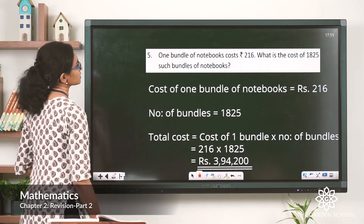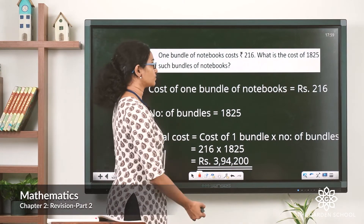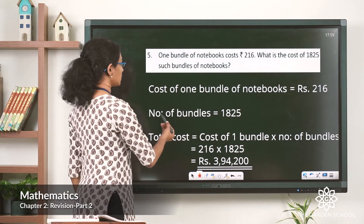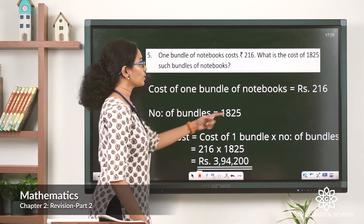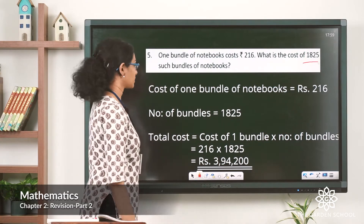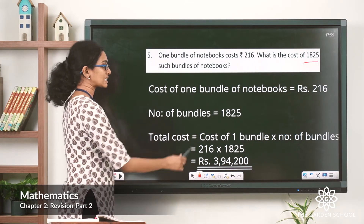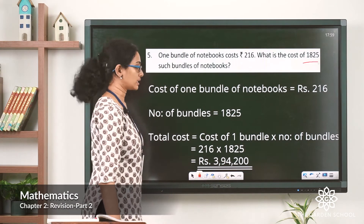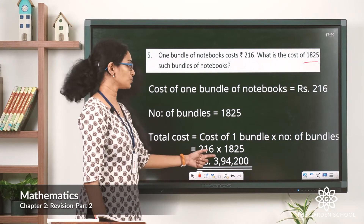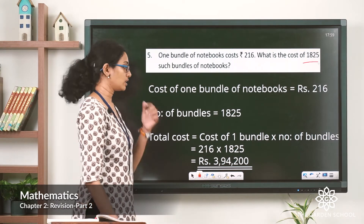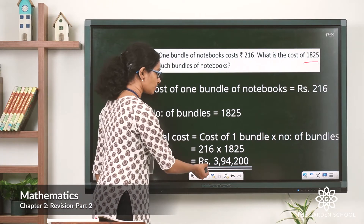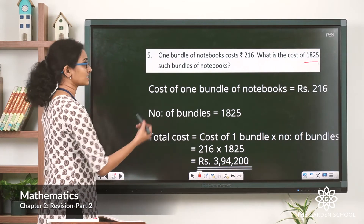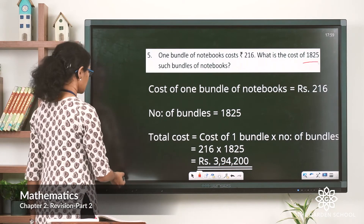Let's write down the steps. The cost of one bundle of notebooks equals rupees 216. The number of bundles equals 1,825. The total cost equals the cost of one bundle multiplied by the number of bundles, which is 216 into 1,825. That gives a total cost of rupees 3,94,200 — the cost of 1,825 bundles of notebooks.